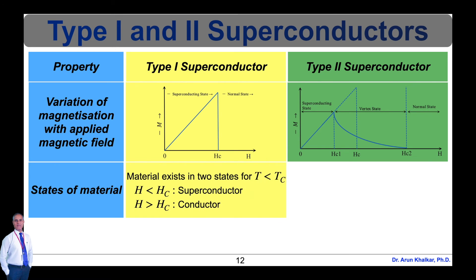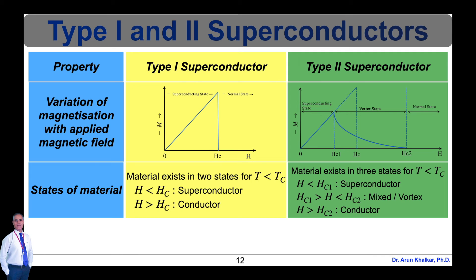Next property is the state of the material. For type 1 superconductors, materials exist in two states when T is less than TC: first, H less than HC is the superconducting state; and H greater than HC is the conductor state. For type 2 superconductors, material exists in three states when T is less than TC: first, H less than HC1 is the superconducting state; second, HC1 less than H less than HC2 is the mixed or vortex state; and third, H greater than HC2 is the conductor state.